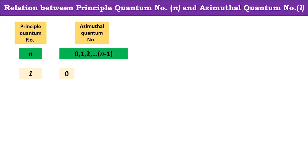For principal quantum number 1, the azimuthal quantum number has only one value, that is 0. For principal quantum number 2, there are 2 values. In this way we can calculate the azimuthal quantum number values from the principal quantum number.